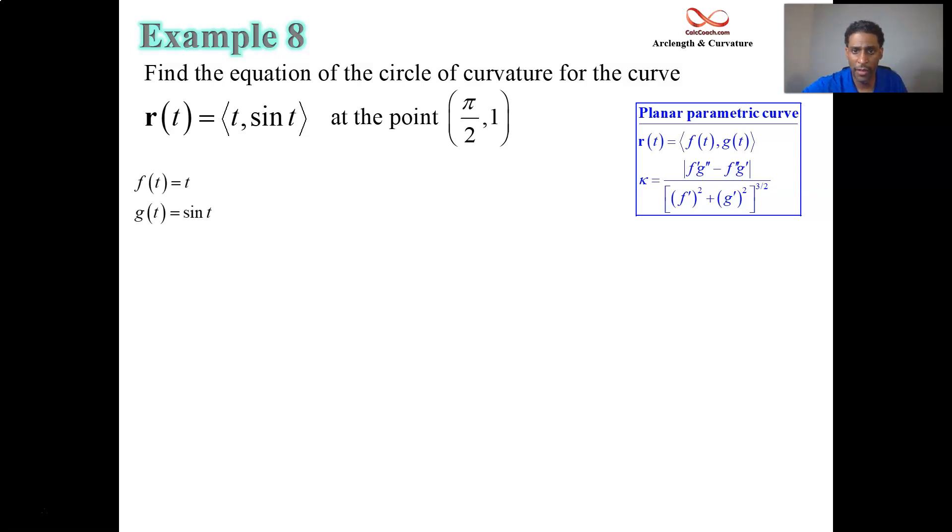we can quickly calculate this formula. So f prime is 1 and g prime is cosine. Double prime, yes, double prime is involved. f double prime is 0 and g double prime is negative sine. This formula in the numerator has the f prime times g double prime minus the f double prime times g prime.